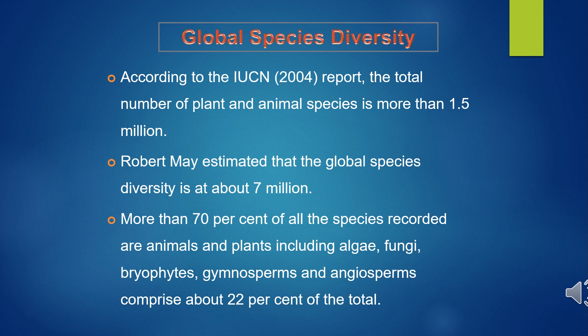According to Robert May, global species diversity is about 7 million. More than 70% of the species recorded are animals, and plants including algae, fungi, bryophytes, gymnosperms, and angiosperms comprise about 22% of the total. Approximately 8% is attributed to prokaryotes such as bacteria, since we cannot see them with the naked eye and therefore cannot easily count them.